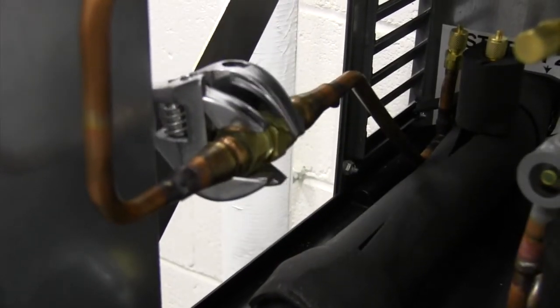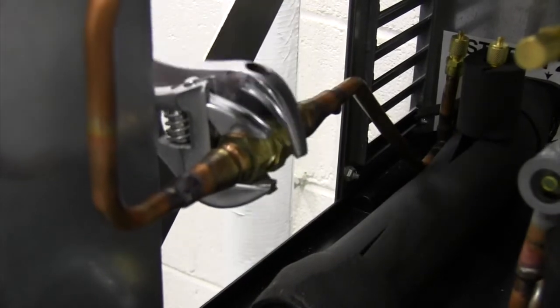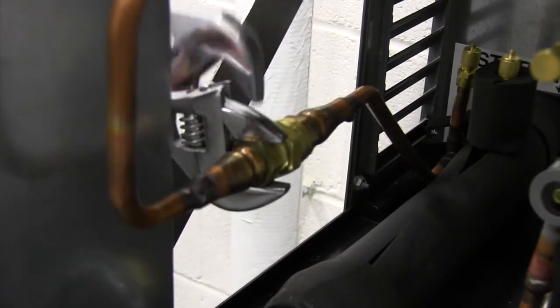To connect the liquid line, you're going to need a backing wrench. We're tightening this down to 30 foot-pounds.